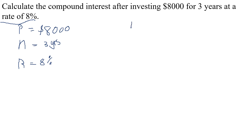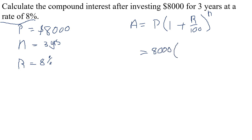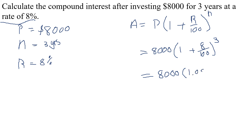The formula for compound interest is A equals P multiplied by (1 plus R over 100) raised to the power of N. We just substitute our values: A equals 8,000 multiplied by (1 plus 8 divided by 100) raised to the power of 3, since N is 3, the number of years. Simplifying, this is 8,000 multiplied by 1.08 cubed.